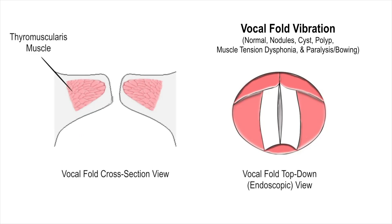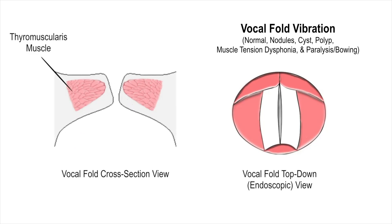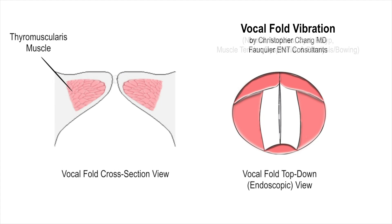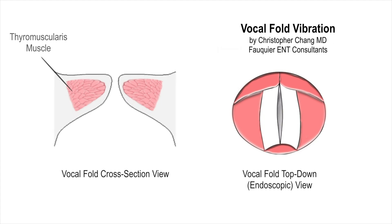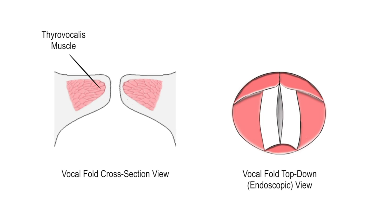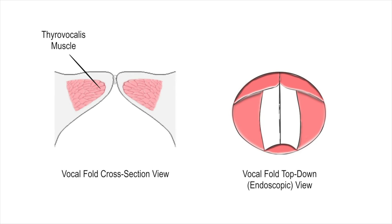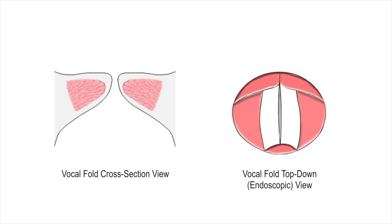The human voice is the product of a complex process. It all begins with air passing between the vocal folds, causing them to vibrate which results in the generation of sound waves. When the vocal folds are seen in coronal view, instead of being thin, band-like structures, they are actually wedge-shaped triangles.